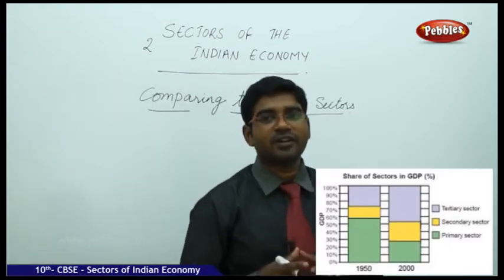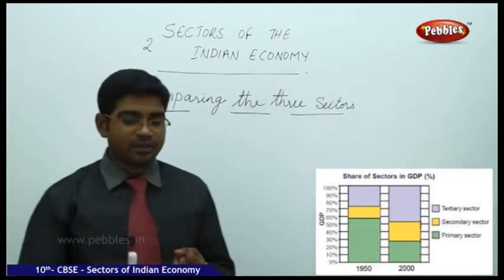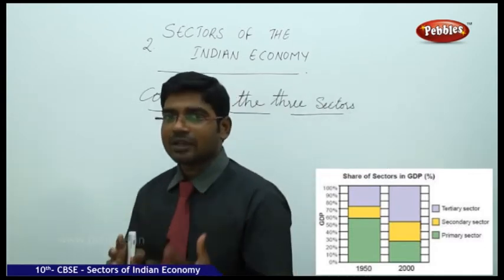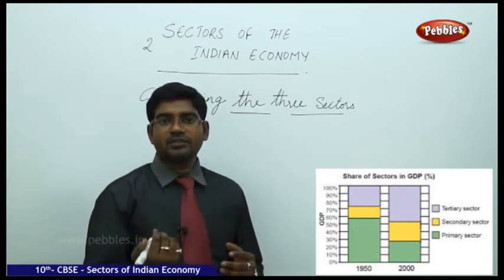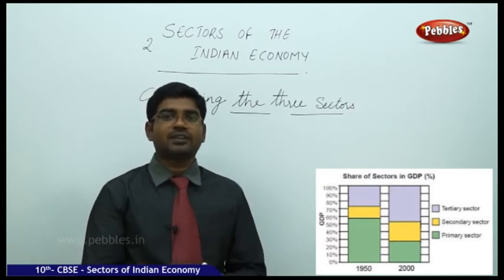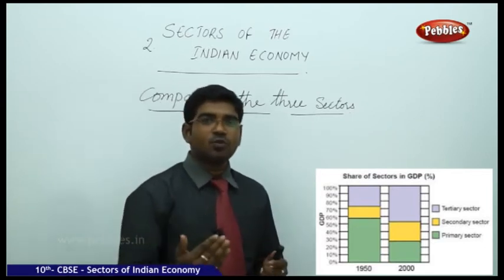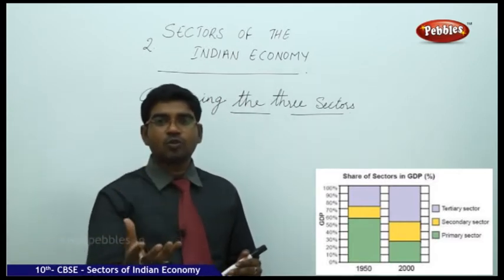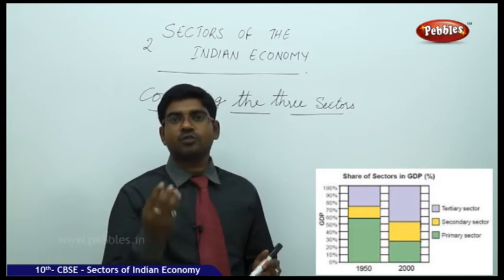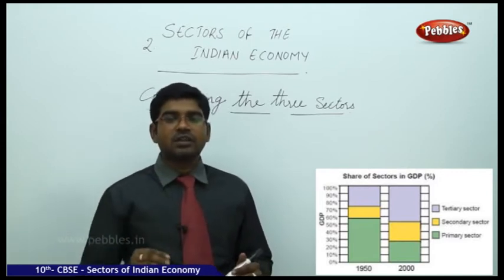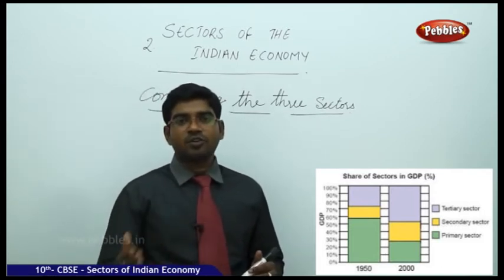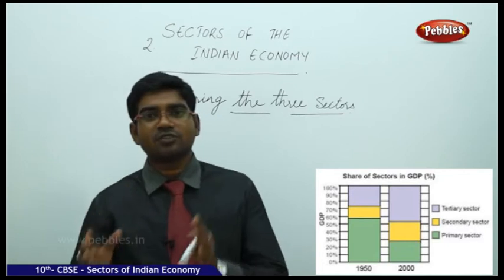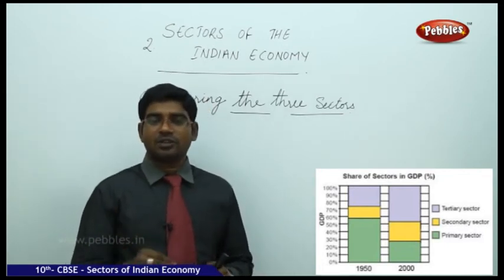Till now we have seen the three different categories or sectors of people working: the primary sector, the secondary sector, and the tertiary sector. Under the primary sector, people directly acquire from nature. Moving to the secondary level, raw materials are used and manufactured into valuable goods — this is also known as the industrial sector. After these two, marketing, transportation, services, medical, and financial activities are service-oriented, giving us the third sector named the service sector, whose actual name is the tertiary sector.